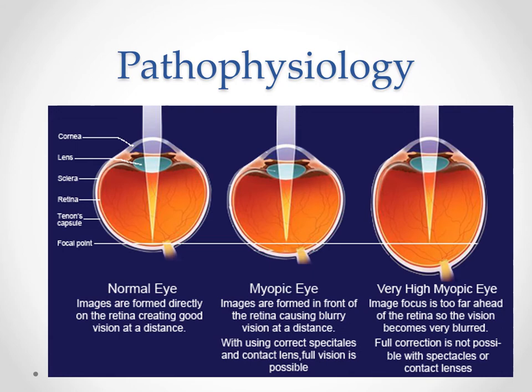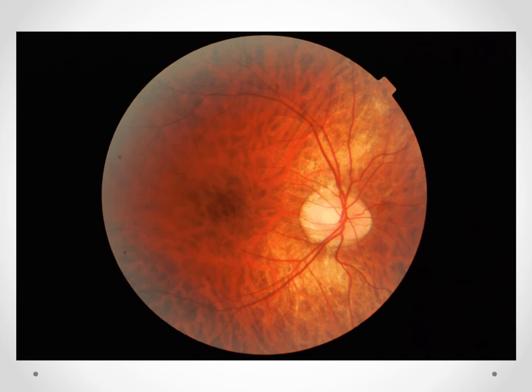So what are the clinical signs? As the eye stretches and gets thinner, this can create a tessellated fundus, giving a more checkered appearance and allowing the choroidal vessels to be seen more clearly.